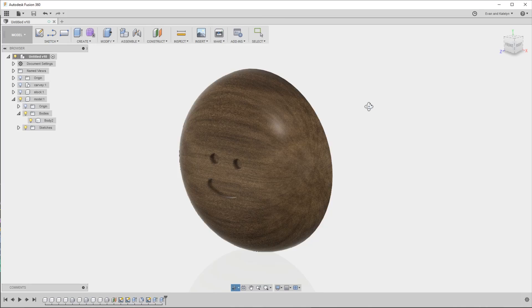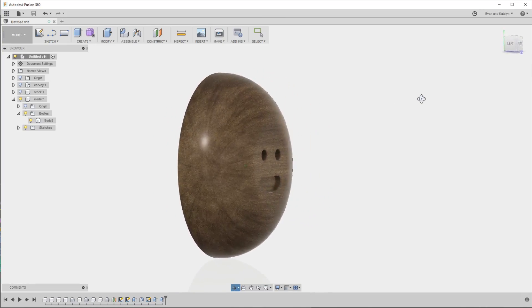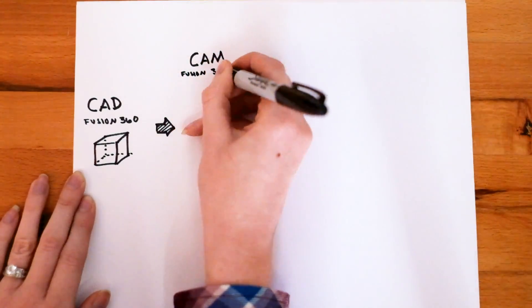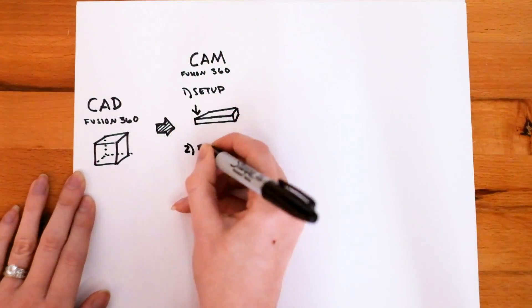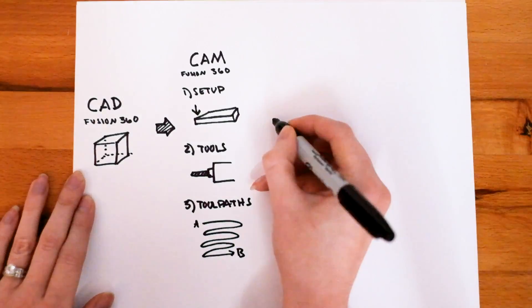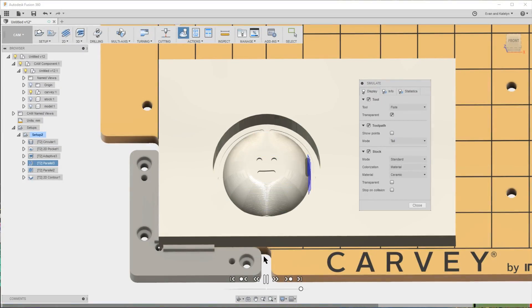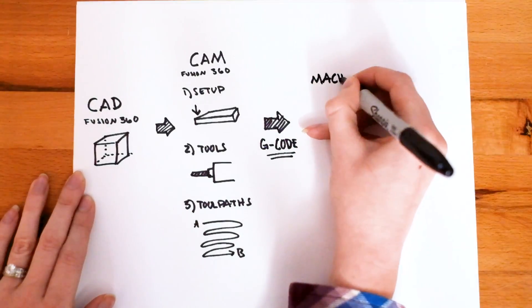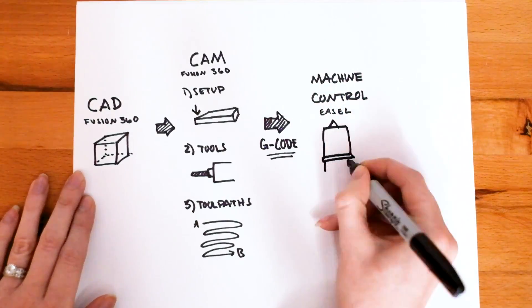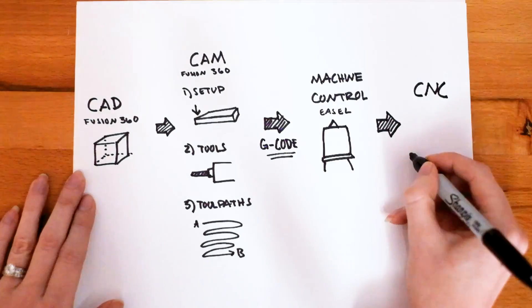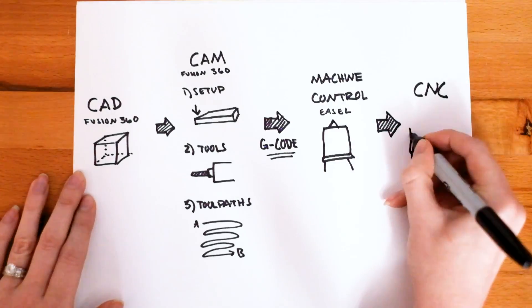First you need a 3D CAD model of the thing you want to carve. You can design one yourself or download existing models to use. Then you show the CNC how to carve this model from your stock material. This process is called CAM. Next you load these instructions into your machine control software, in this case Easel. Click run and your CNC takes those instructions and starts carving.